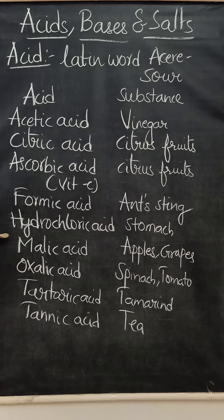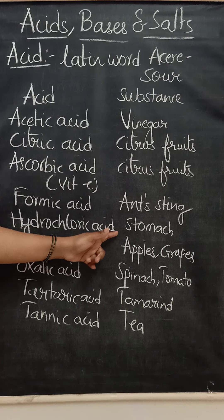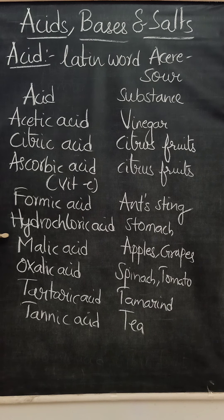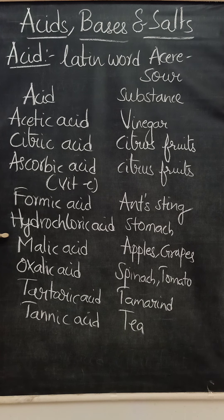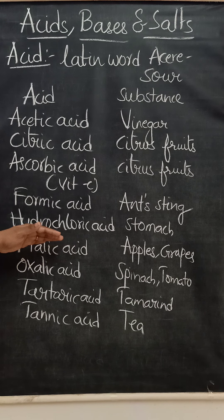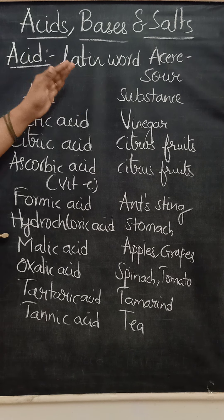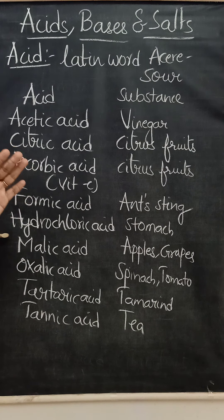Except hydrochloric acid, all these organic acids are weak acids and will not cause any harm. Hydrochloric acid acts upon the food we have taken, helping in digestion and killing of microorganisms. Whenever we take food, it may contain some microbes, and hydrochloric acid is helpful in killing those microbes. So far we have studied about common organic acids and the substances in which they are found.